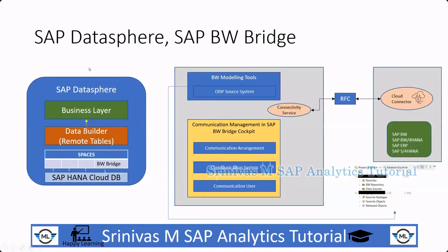Within SAP BW Bridge we can perform modeling. Using the Eclipse-based modeling tool we can model SAP BW objects like info objects, ADSO, composite providers, transformations, and data flows. For SAP BW resources, these are all very familiar and the environment is just like BW4HANA. Using BW Bridge with the Eclipse-based modeling tool, our BW concepts come to life and we can do full BW modeling.